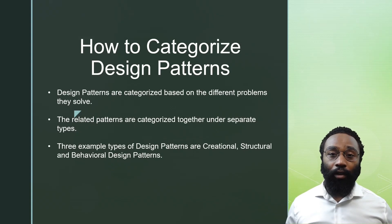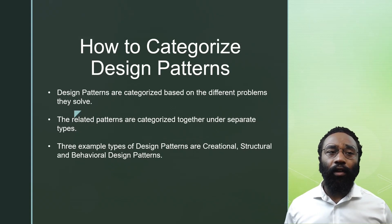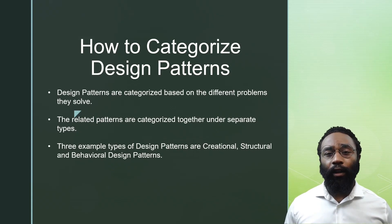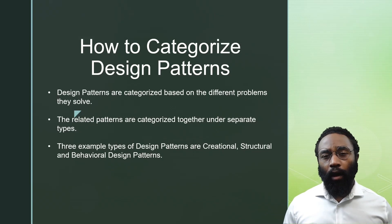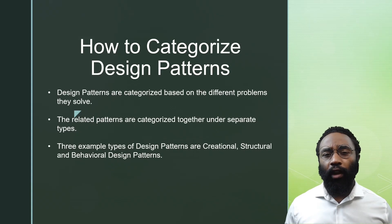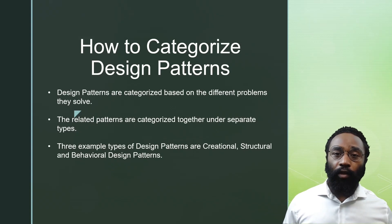Categorizing design patterns: they are signified by the different problems that they solve. The three examples we're going to look at today are creational, structural, and behavioral design patterns. There are numerous design patterns — one would argue they're growing each day. There's a group called the Gang of Four who have a great book on design patterns covering 23 patterns, categorizing the different problems they solve. These are the guys who pretty much coined the term in the software engineering industry.